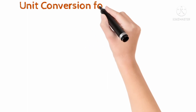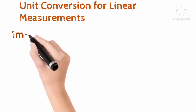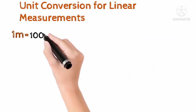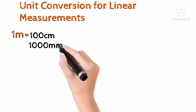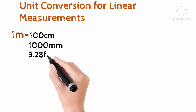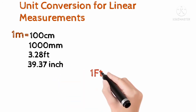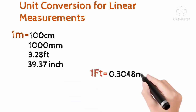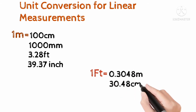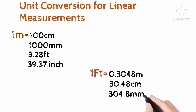Unit conversion for linear measurements: 1 meter equals 100 centimeters, 1,000 millimeters, 3.28 feet, 39.37 inches. 1 foot equals 0.3048 meters, 30.48 centimeters, 304.8 millimeters, 12 inches.